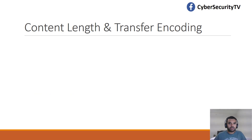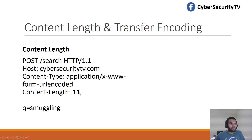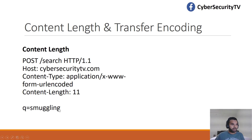Let's talk about the Content-Length and Transfer-Encoding headers. Content-Length determines how many characters are in the request body — for example, a value of 11 includes newline characters and all characters in the body. When the request reaches the front end or back end, they use this value to know where the request ends. Anything after the 11th character will be counted as a new request. That is the significance of Content-Length.